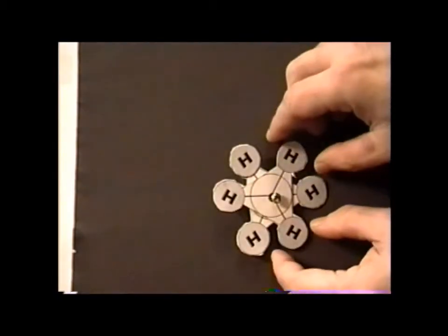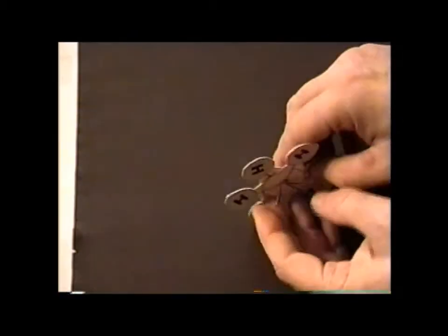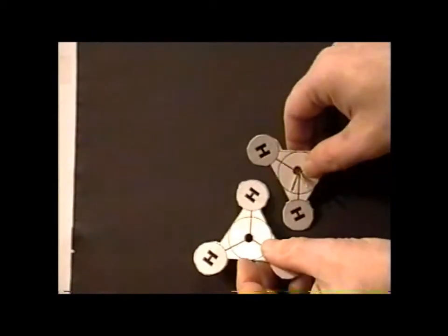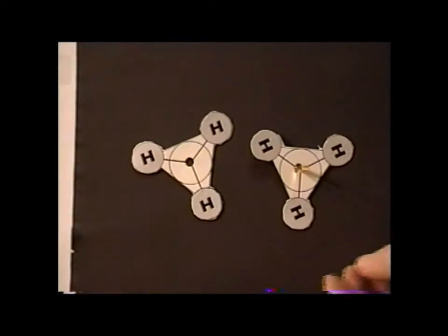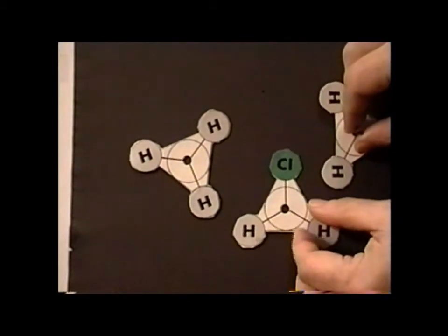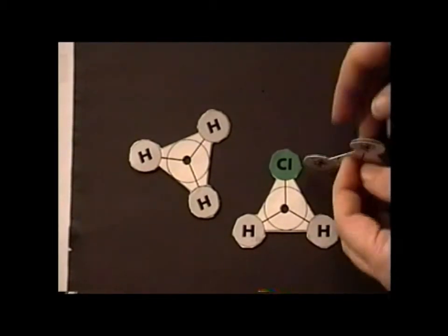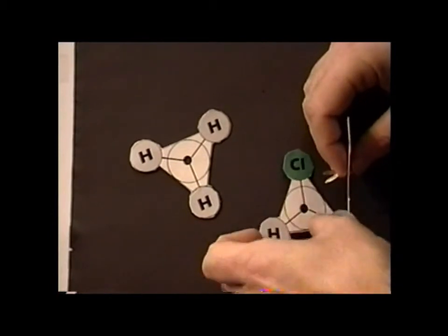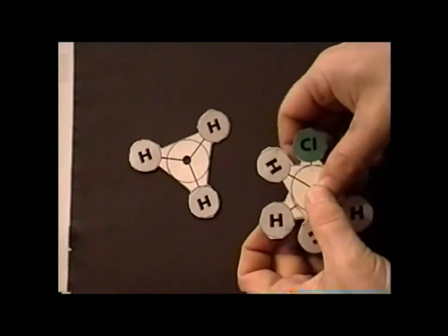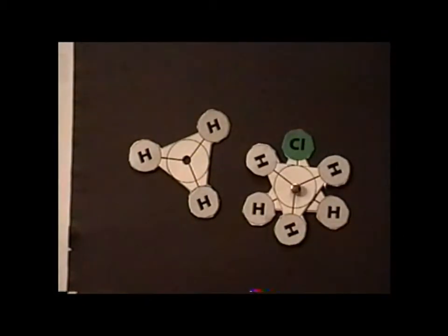Another advantage of making models of Newman projections is that we can do the following. For example, if we take our ethane, we can disassemble the model temporarily, take away the second carbon conformations and replace it with a single chlorine and two hydrogens, a chloromethyl substituent, and we can reassemble our Newman projection. Once we've reassembled it, now we have a model of chloroethane.